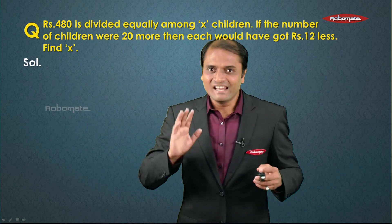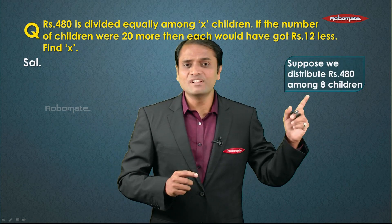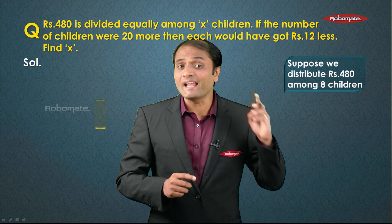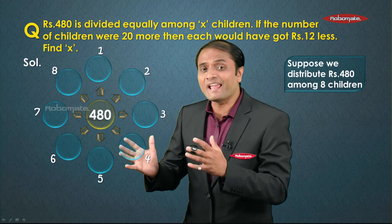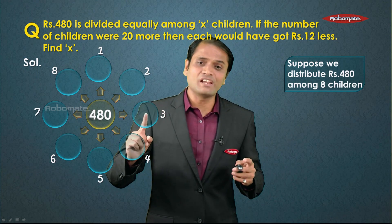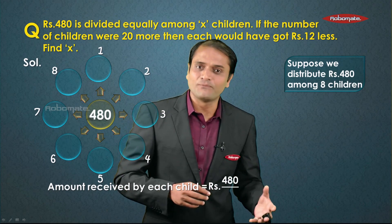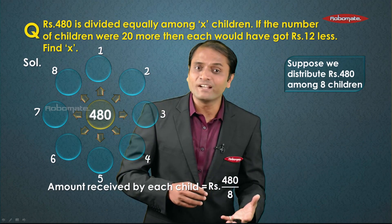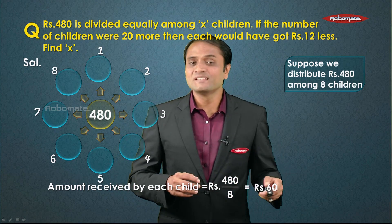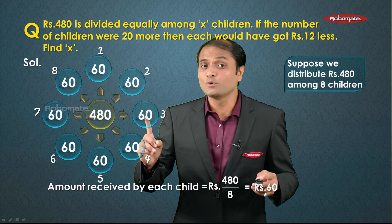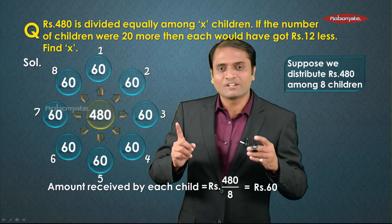Let's reinforce this with one more example. Suppose I distribute rupees 480 equally among eight children — the amount is divided into eight equal parts. The amount received by each child will be 480 upon 8, which equals rupees 60. Each child receives rupees 60. Now let's go back to our sum.